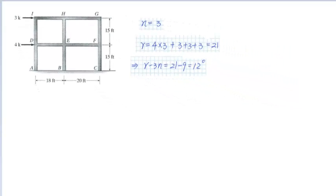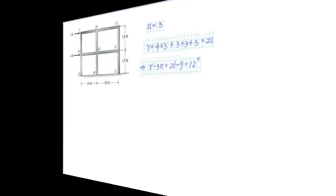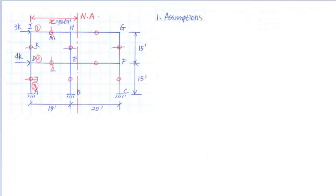Therefore, we need 12 additional equations or assumptions to reduce this frame to statically determinate. Now, we need to make assumptions for the frame using the cantilever method.